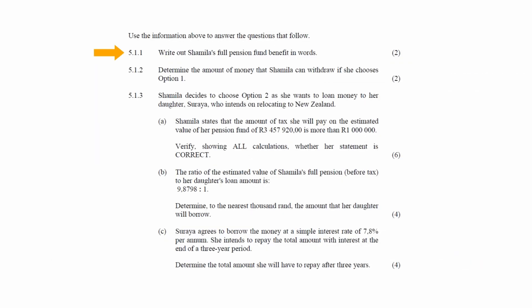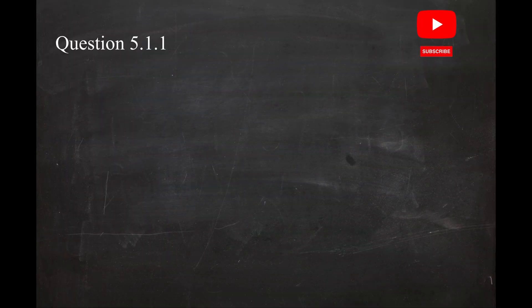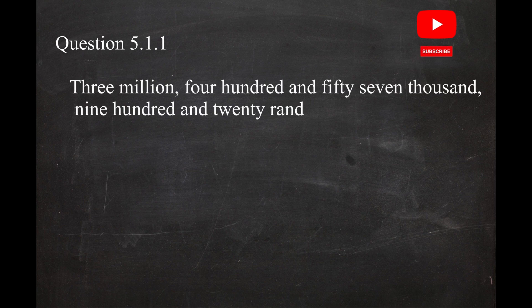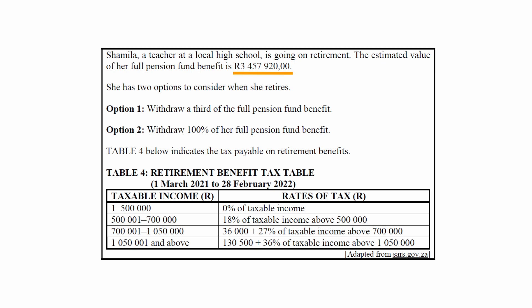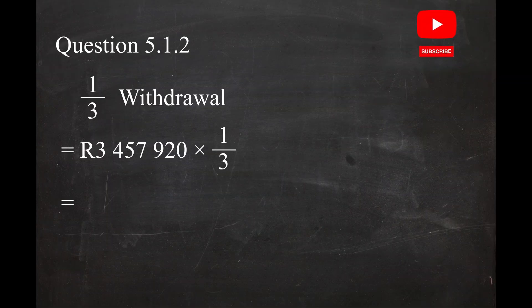In Question 5.1.1, you have to write out the person's full pension fund benefit in words: three million, four hundred and fifty-seven thousand, nine hundred and twenty rand. In Question 5.1.2, you have to calculate the amount the person can withdraw if she chooses one-third of the full pension fund amount. This equals R3,457,920 multiplied by one-third, which equals R1,152,640.